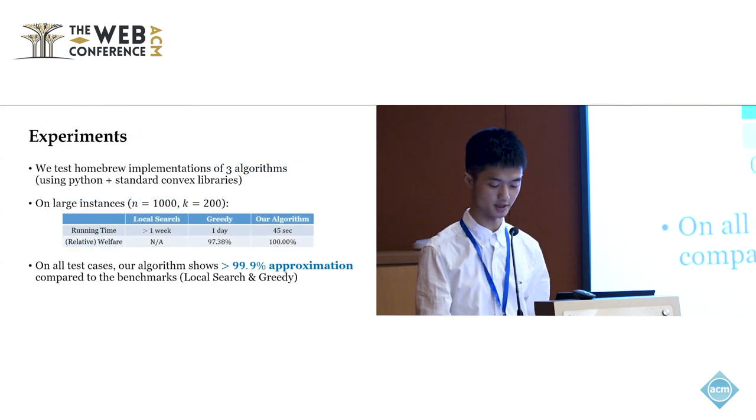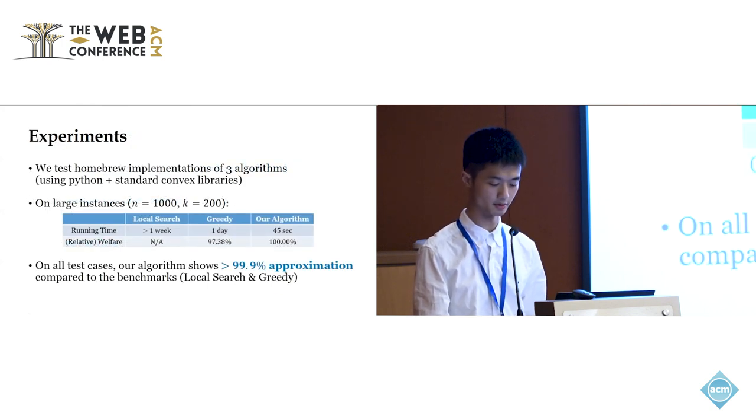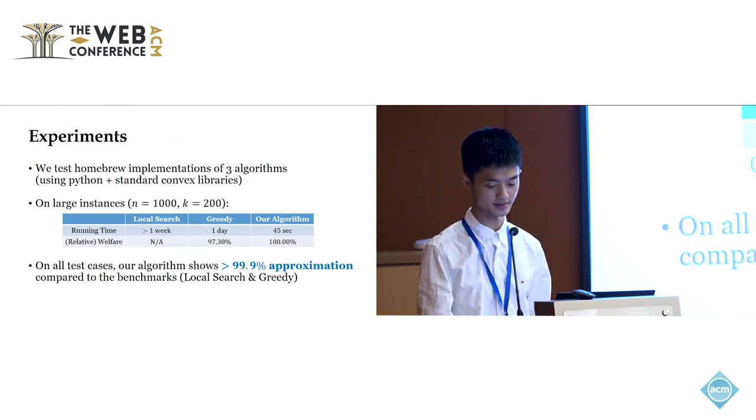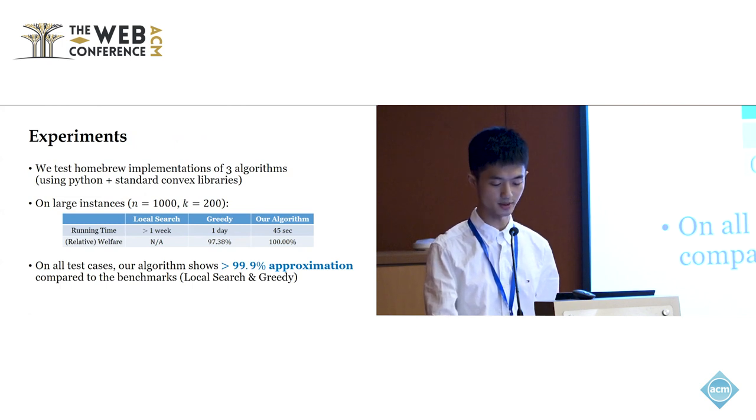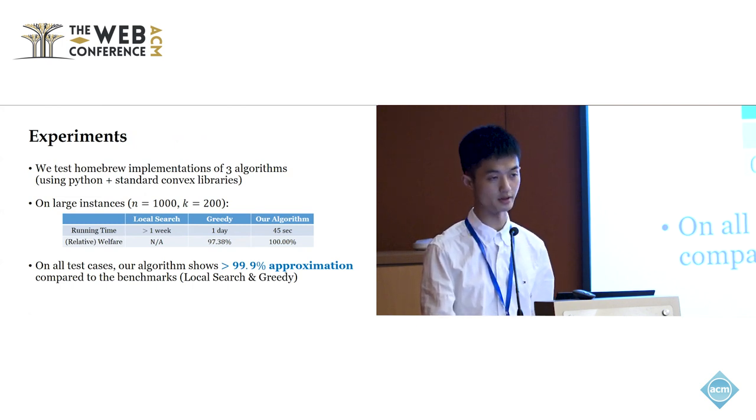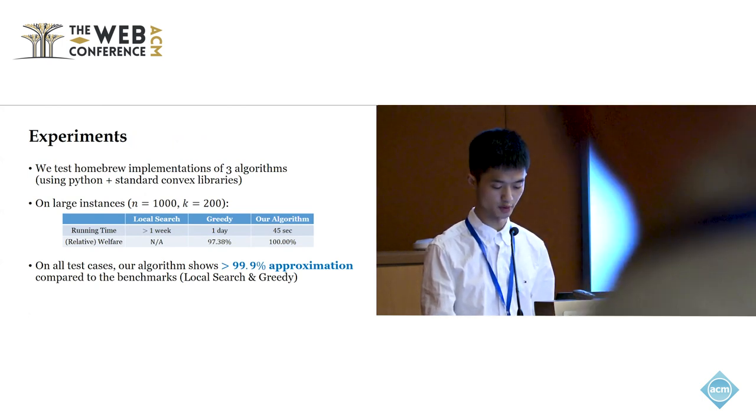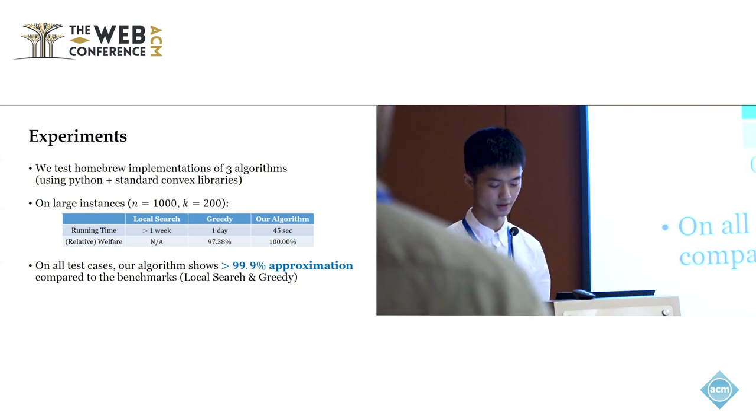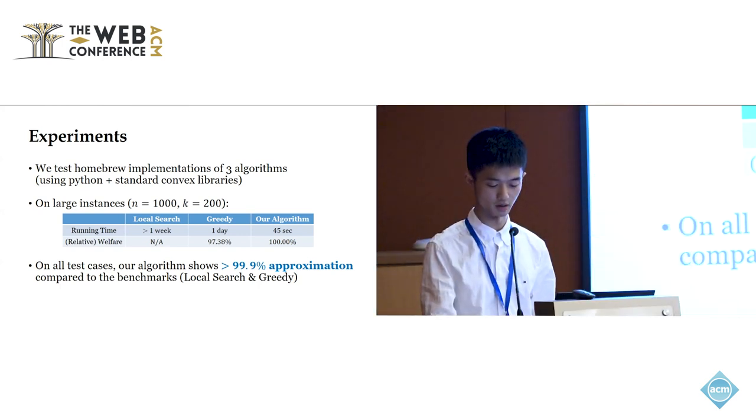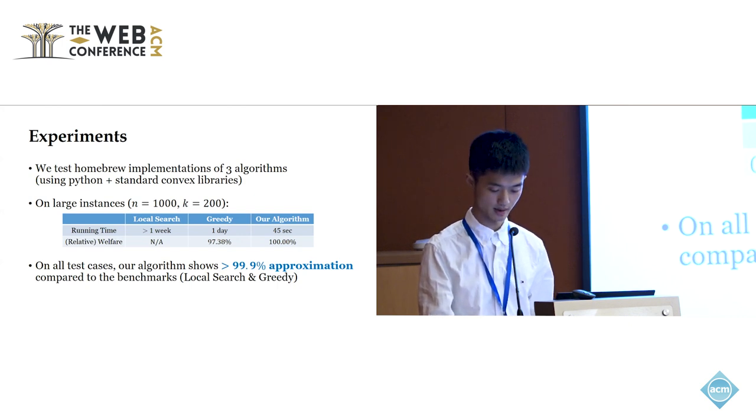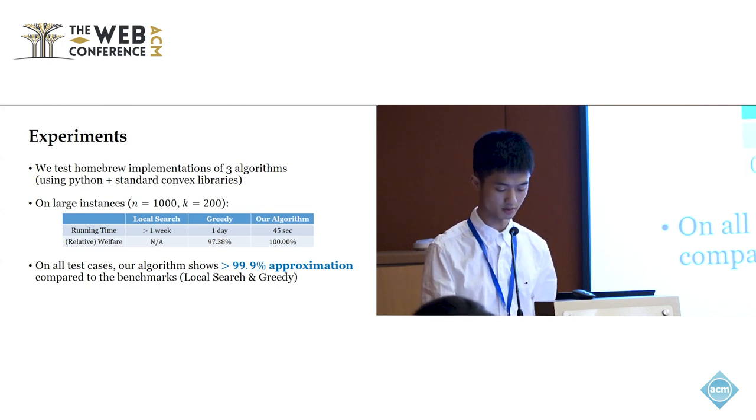Since our method is built upon convex optimization, we were able to implement our algorithm using Python and standard convex optimization libraries. Since the problem is NP-hard, we tested our algorithm against two heuristic algorithms, local search and greedy. On all of the test cases, our algorithm shows over 99.9% approximation compared to the best-performing heuristic. Moreover, the running time of our algorithm scales much slower than the benchmarks. As a result, on large instances like n equals 1000 and k equals 200, both benchmarks took more than one day, while our algorithm took only 45 seconds.